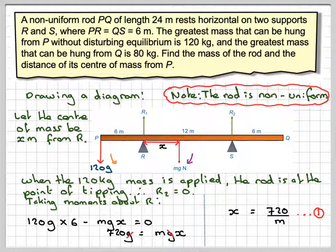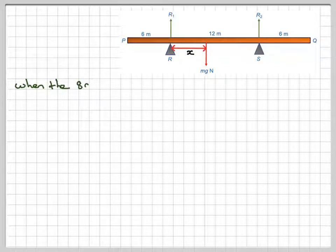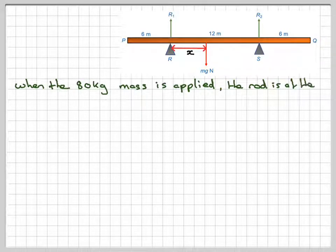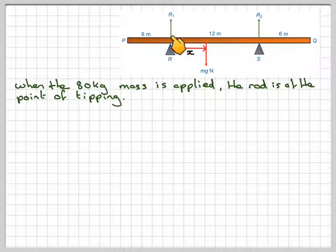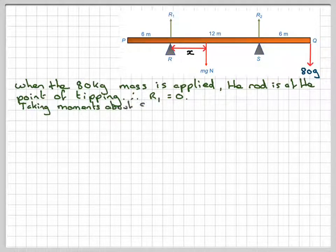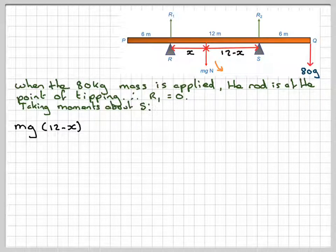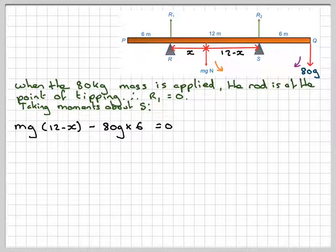We'll now repeat the problem by placing the 80 kilogram at this end and taking moments about this point here. Using the diagram, keep that same distance there as X. This will be at the point of tipping, therefore R1 will be equal to zero. We've got an 80G Newton force acting downwards here. So we're taking moments about this point S. Anti-clockwise we're going to have, now we've got to work out what this distance is from S. If this is 12, then this distance here will be 12 minus X. So Mg times 12 minus X minus the clockwise moment, which is going to be 80G times 6, and that's going to be equal to zero.